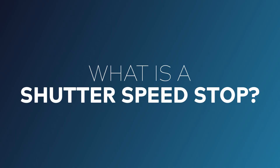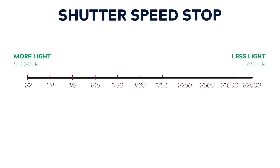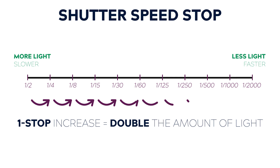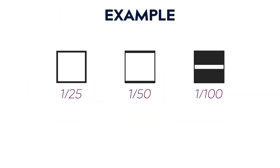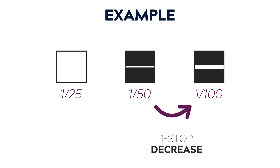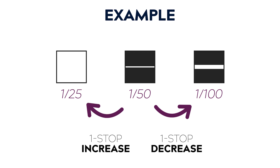It turns out that image stabilization stops refers directly to this rule, and more specifically to shutter speed stops. So a quick recap on what a shutter speed stop is: when you double or halve your shutter speed, you get double or half the amount of light — a one stop increase or decrease. An example would be moving from 1/50th of a second to 1/100th of a second, or from 1/50th to 1/25th of a second. Both of these are a one stop change.